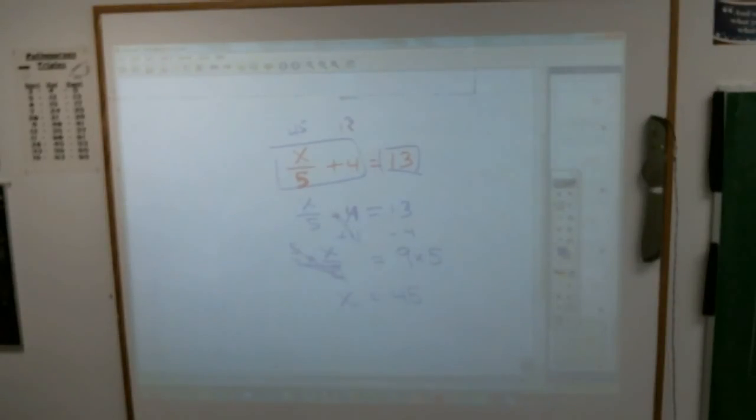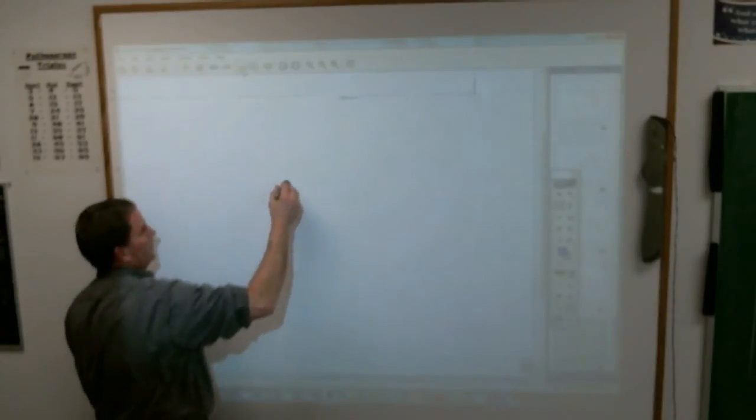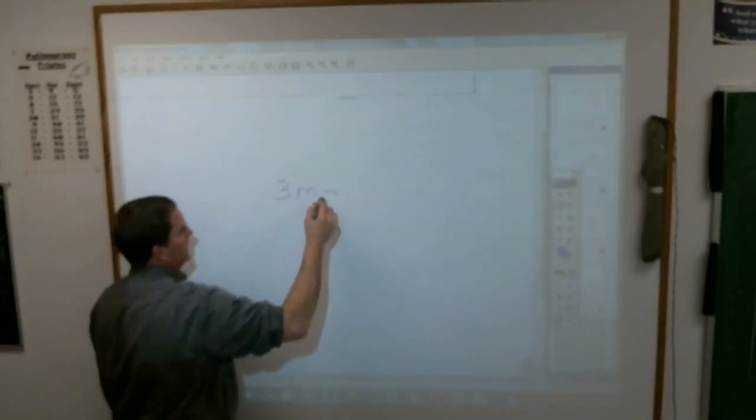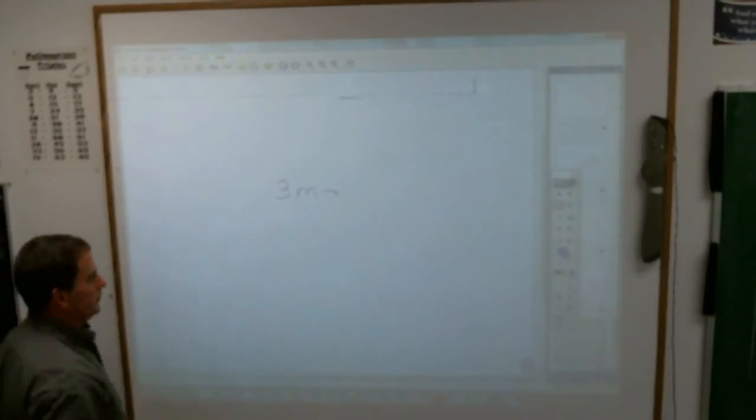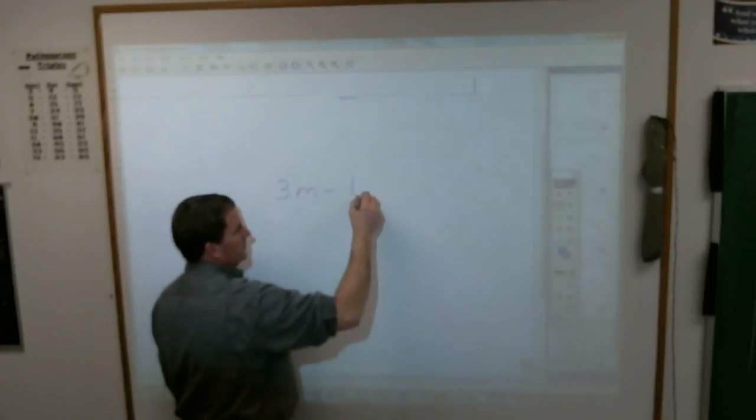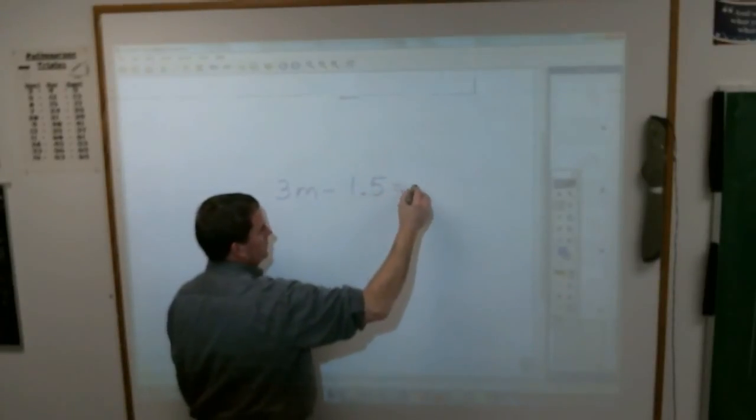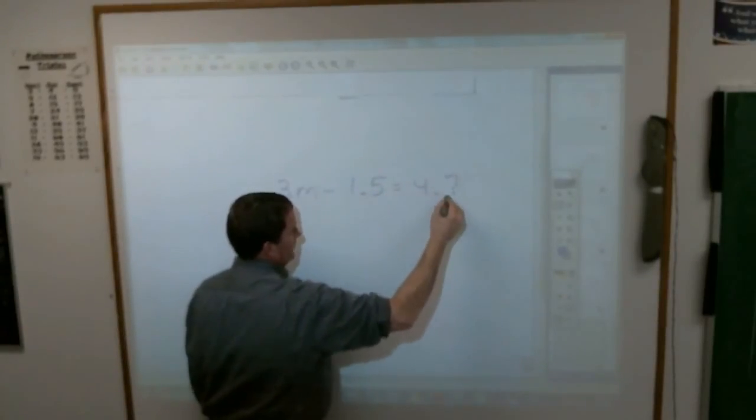Let's do one more. 3x minus 1.5 equals 4.2.